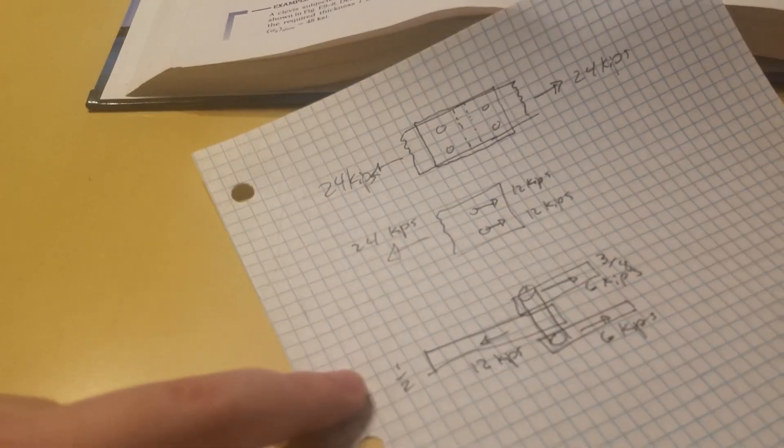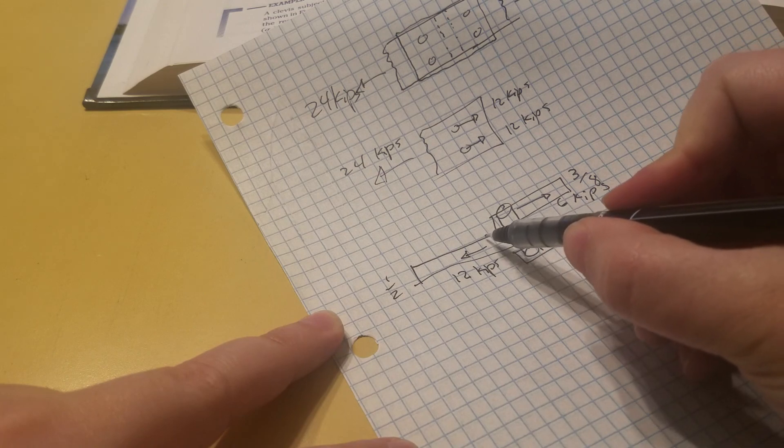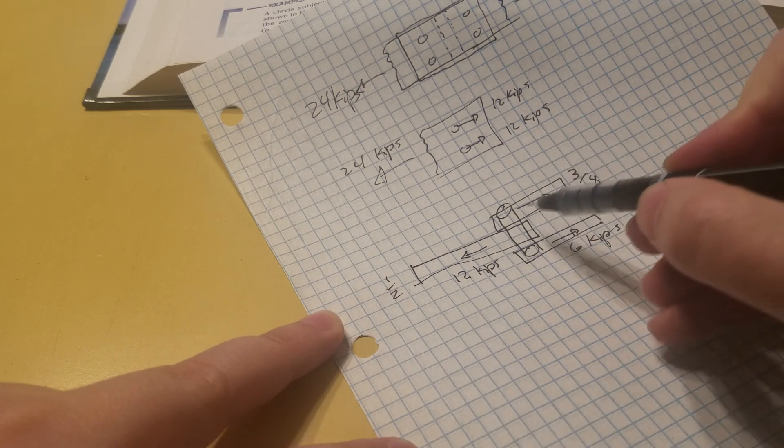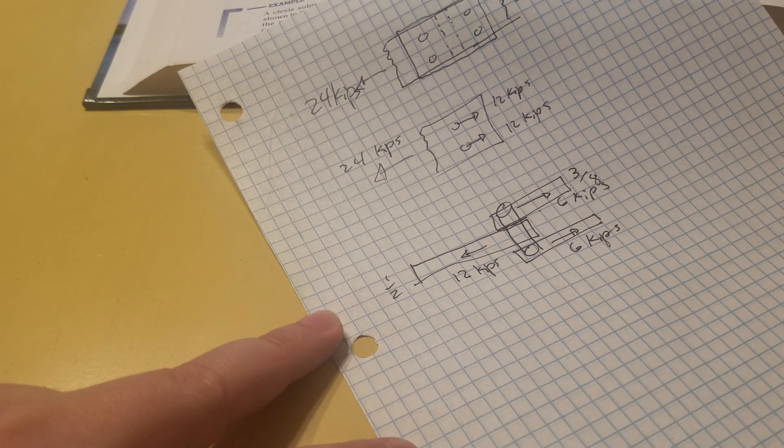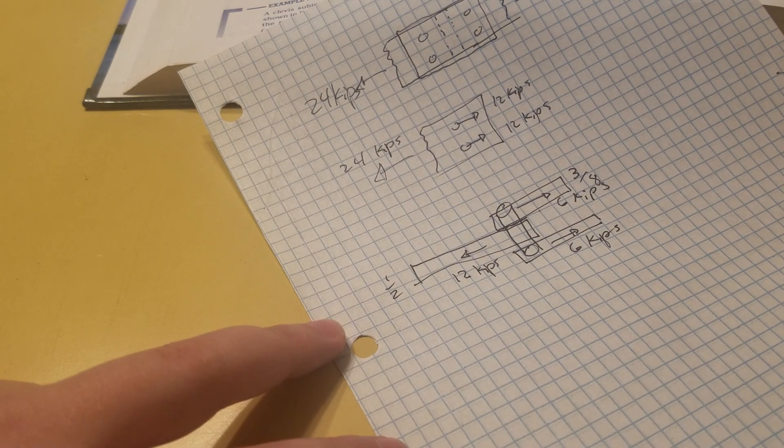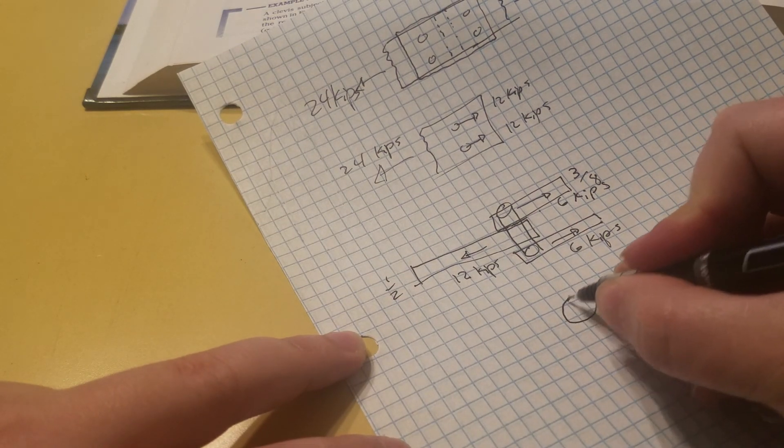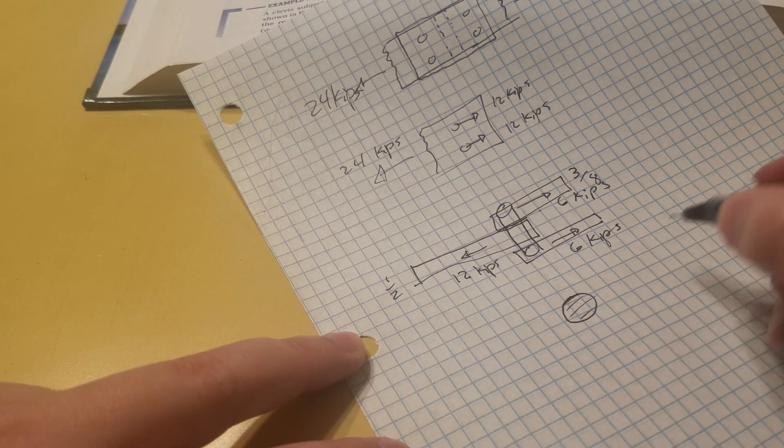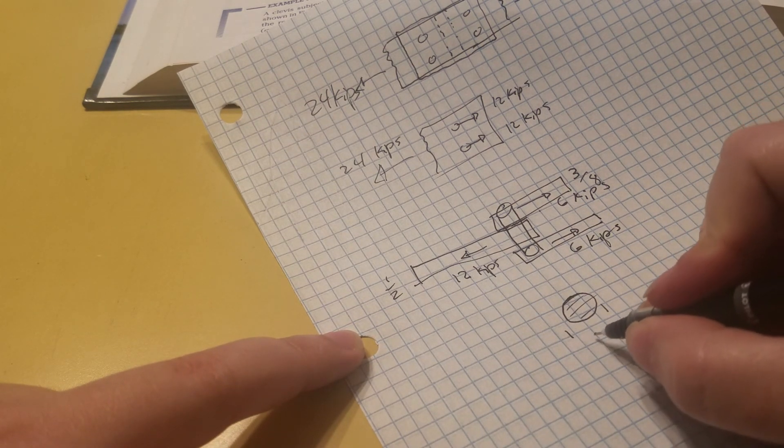So now your shearing interface is right here between the two plates. So if this was to pull apart, it would have to crack all of that material all at the same time. So that's this surface, right? So depending on the bolt's diameter, what was it given as? Three fourths.